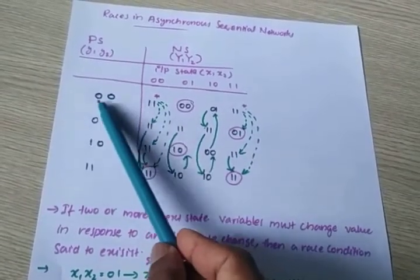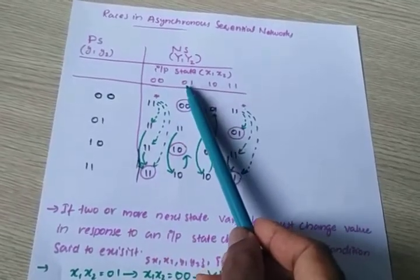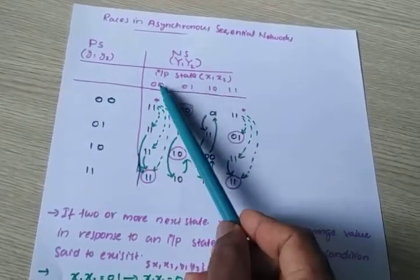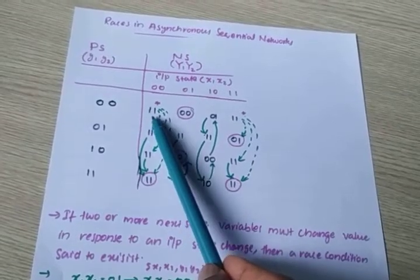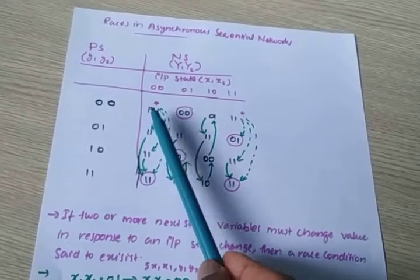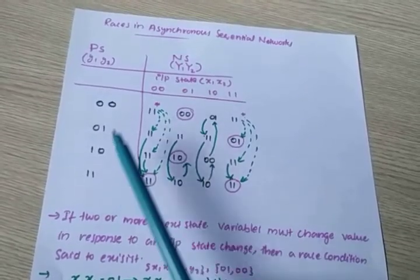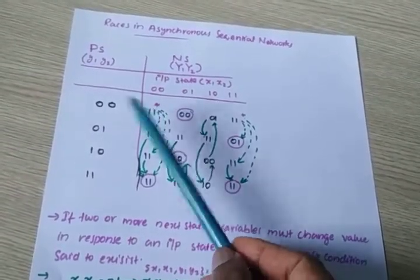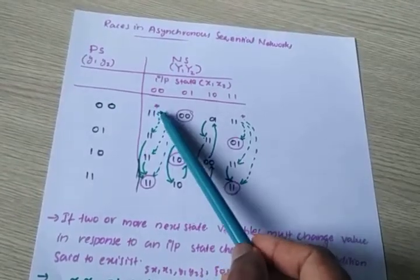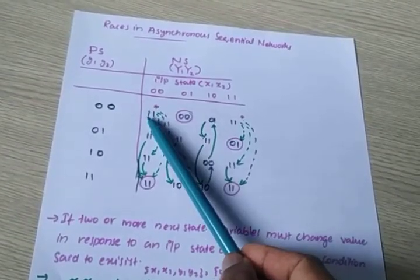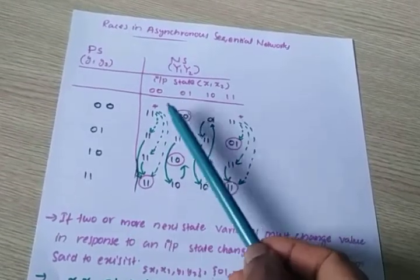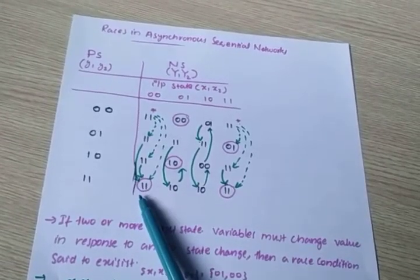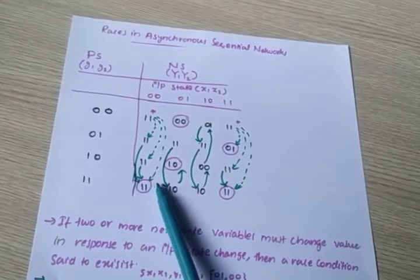The next state is 1, 1. After a time delay, this becomes the present state, because in the feedback path we are using a delay device. So after time delay, this 1, 1 becomes the present state. And at that time, what is the next state? 1, 1 only — the state becomes stable.